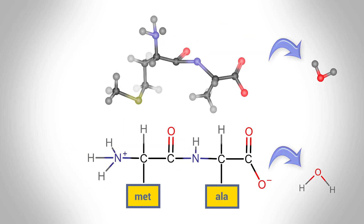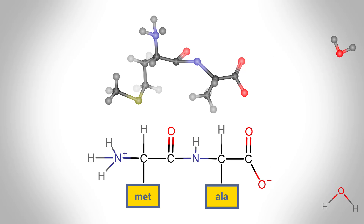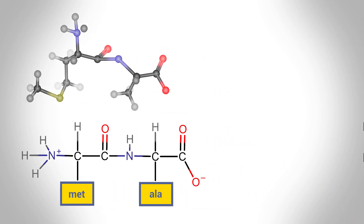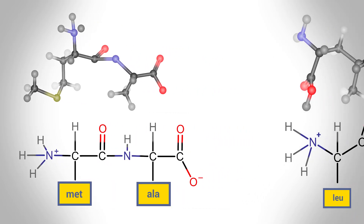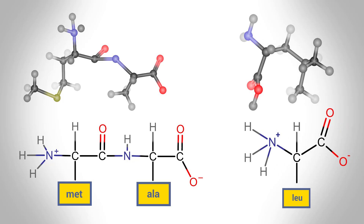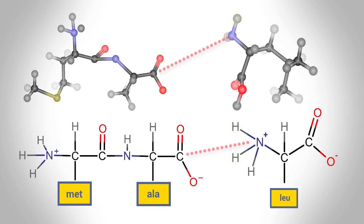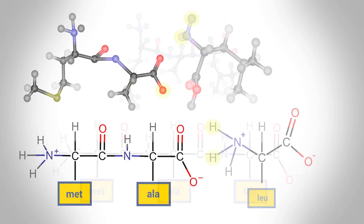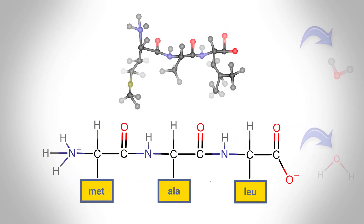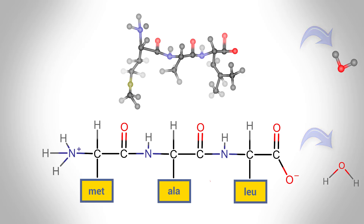Water forms as a byproduct of the reaction. The next amino acid specified by the DNA is leucine. Again, atoms are removed and a new covalent bond forms, and another molecule of water forms as a byproduct.